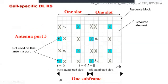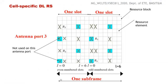For antenna port 3, similarly, the second OFDM symbol is used for transmitting the cell-specific reference signal. In even-numbered slots, it starts from the third subcarrier frequency; in odd-numbered slots, it starts from the first subcarrier frequency. Ports 0 and 1 are similar to each other with reversed patterns, and ports 2 and 3 are similarly related to each other.